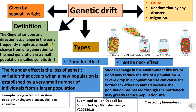The genetic drift term was given by Sewall Wright and it is also called the Sewall Wright effect. So genetic drift is a natural, random and directionless change in the allele frequency simply as a result of chance from one generation to the next generation in a small population.